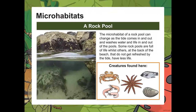Another example of a micro habitat is a rock pool. The micro habitat of a rock pool can change as the tide comes in and out, washing water and life in and out. Some rock pools are full of life, while others at the back of the beach that don't get refreshed by the tide have less life and less light.